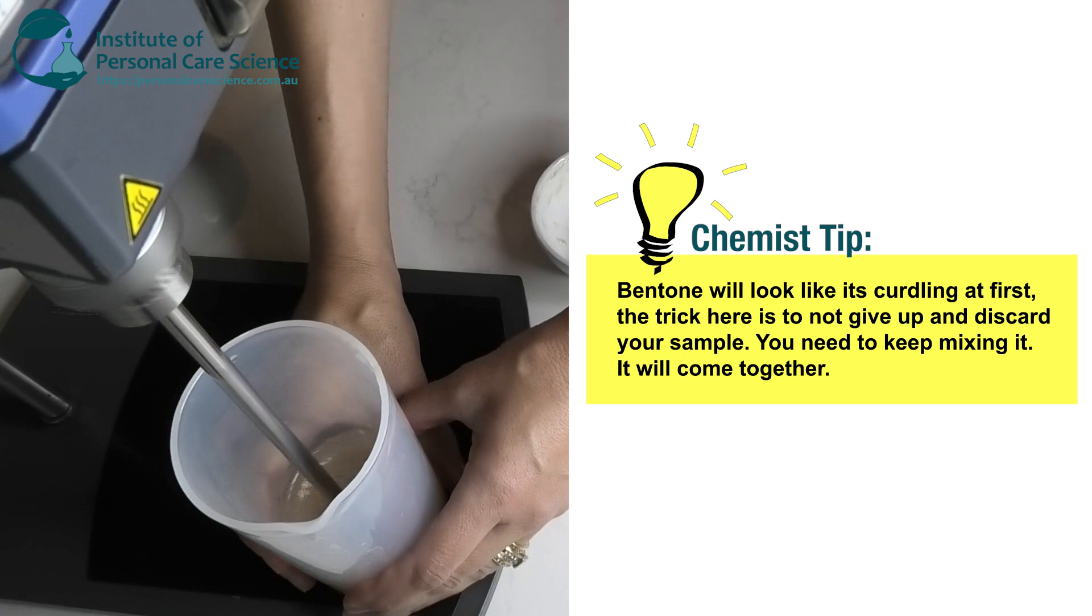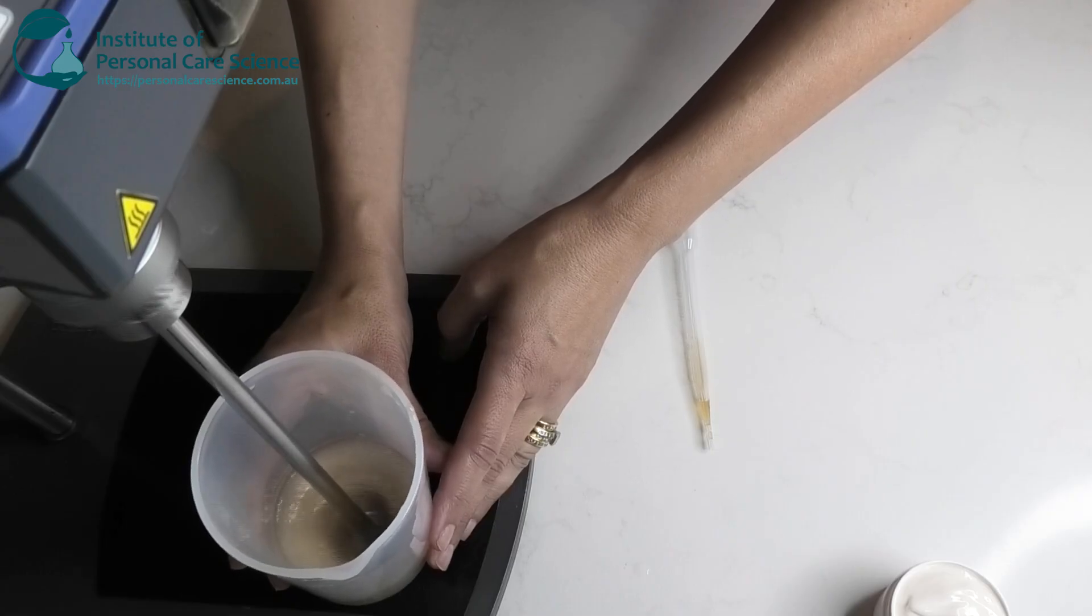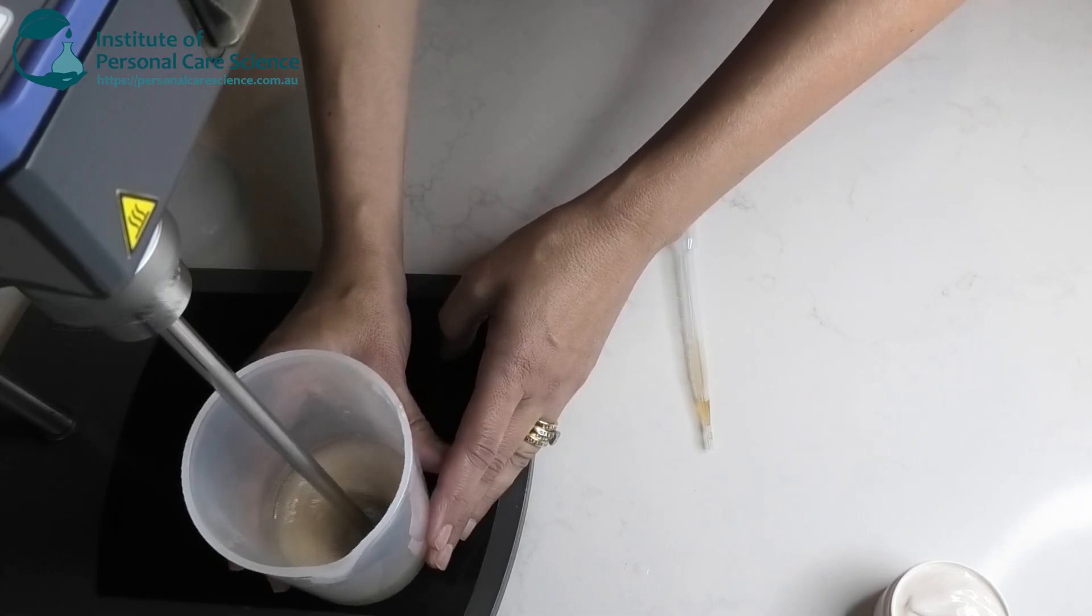Now the trick with Bentone, once you've added it to the water phase, it sort of looks like it's curdling at first. The trick is to not give up and throw out your sample. You just need to keep mixing it. It will go into the formula. You can see it starting to thicken as the Bentone is blending with the water phase.